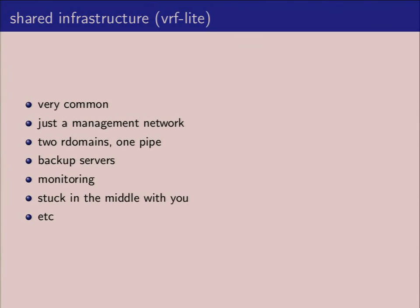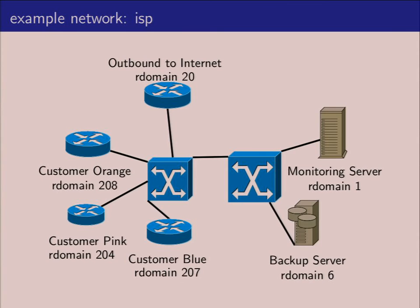I'll give an example of what sort of network you can create with VRF Lite and with just a pure routing domain network. This was a very common scenario I saw in a lot of organizations: you have a management network, two outbound routing domains, a backup server, and a monitoring server. The design has the connection to the internet using routing domain 20, not the default routing domain. We have customer orange in 208, customer pink in 204, customer blue in 207, with monitoring and backup servers each in different routing domains.